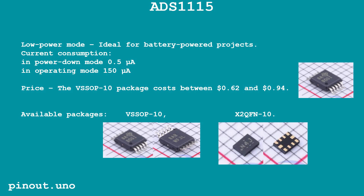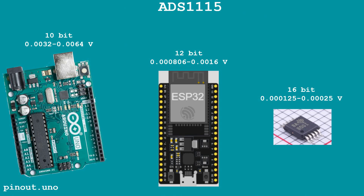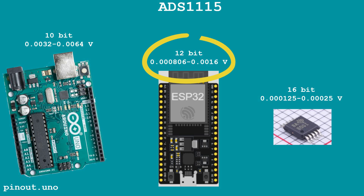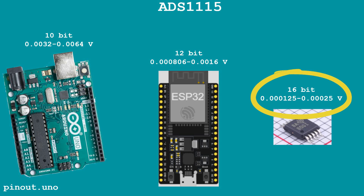What can the ADS1115 do? It significantly expands the capabilities of your microcontroller with high-precision analog signal measurement. Unlike built-in ADCs in Arduino (10-bit) or ESP32 (12-bit), the ADS1115 offers 16-bit resolution, providing 64 times better resolution than Arduino and 16 times better than ESP32. For example, when measuring a 0 to 3.3-volt signal, the maximum measurement precision is much finer with the ADS1115 at gain equals 1.